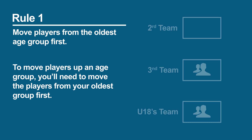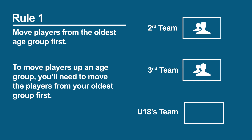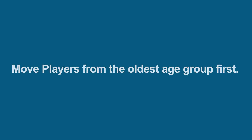For example, move players from the under 18's team to the second or third team, leaving the under 18's team free with no players. This will then allow you to move players from the under 17's to the under 18's team, then the under 16's to the under 17's. Make sure you move the players from the oldest age group first.